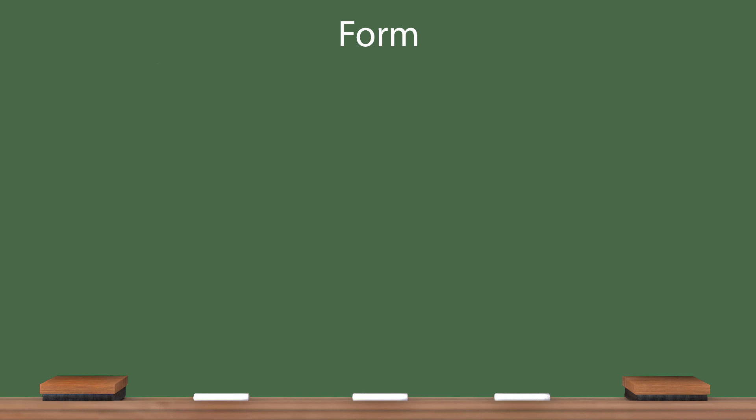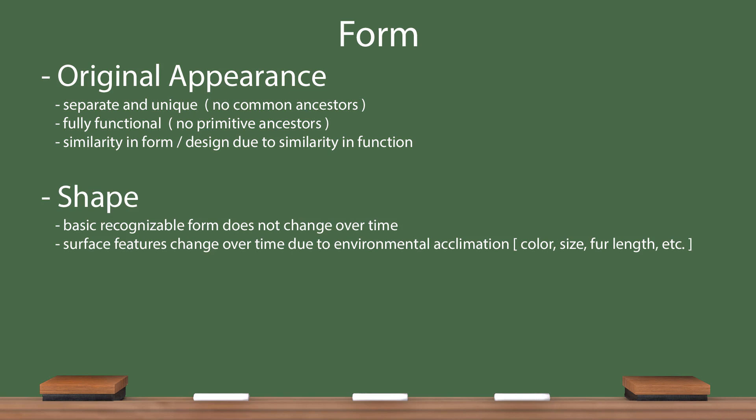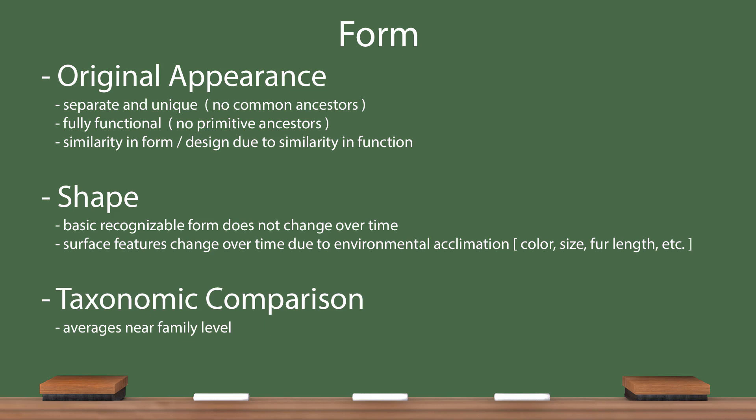The first section of the model I would like to look at is form. When the created kinds originally appeared, they were separate and unique and fully functional. Any similarity in design was due to similarity in function and not by common ancestry. A created kind has a recognizable shape that does not change significantly through time, even if the surface features such as coloration do change frequently. Based on experience, the level of created kinds will average near the family level of classification.